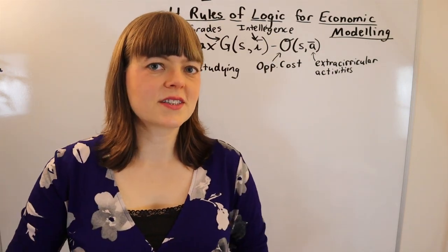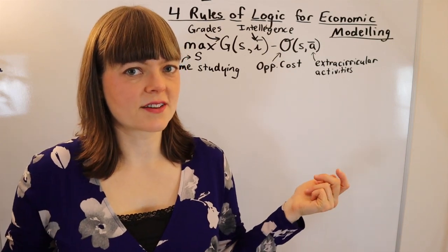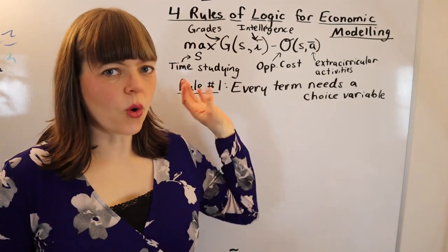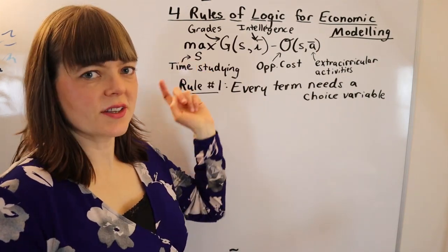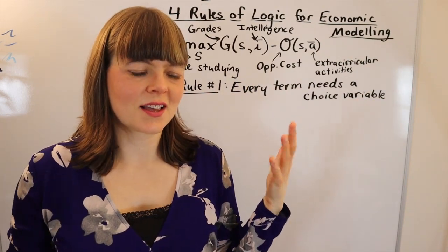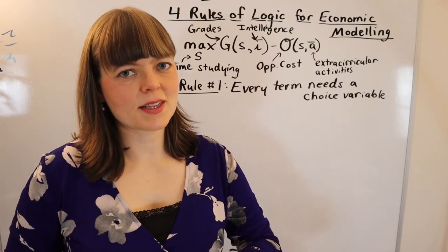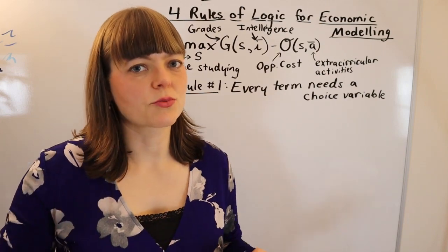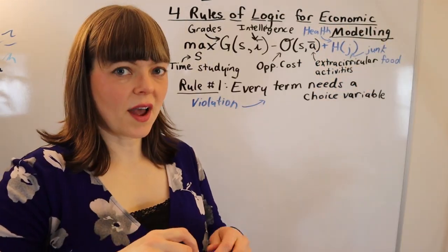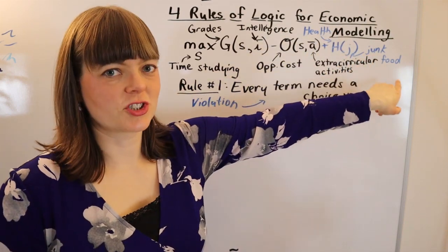The first rule is that every term in a model needs to have the choice variable in it. The reason for this is the whole purpose of a model is to model a particular choice. So if there's a term in the model that has nothing to do with that choice, it just doesn't belong in the model. Let me give you an example of a violation of this rule.